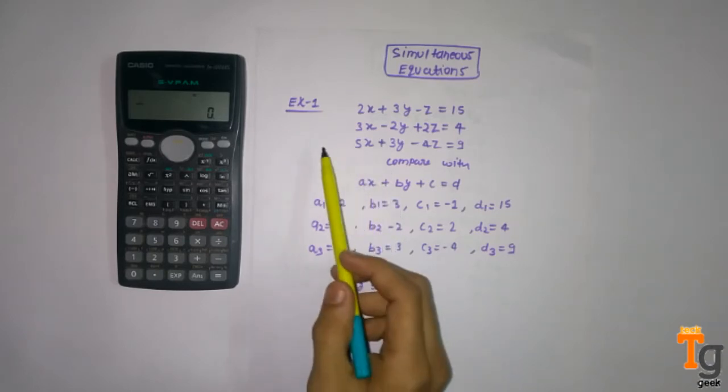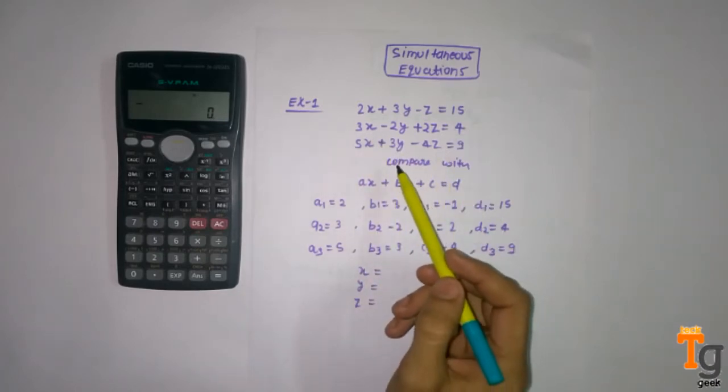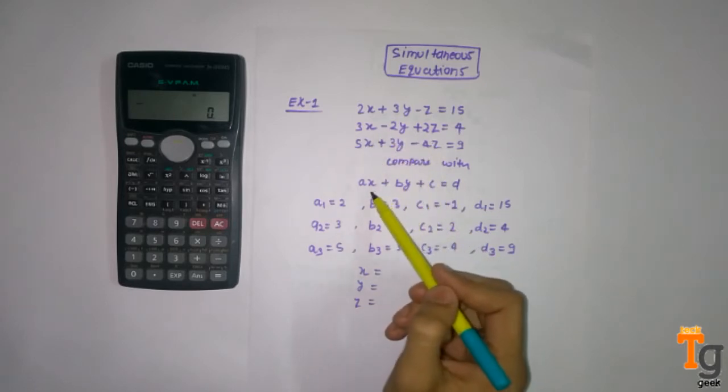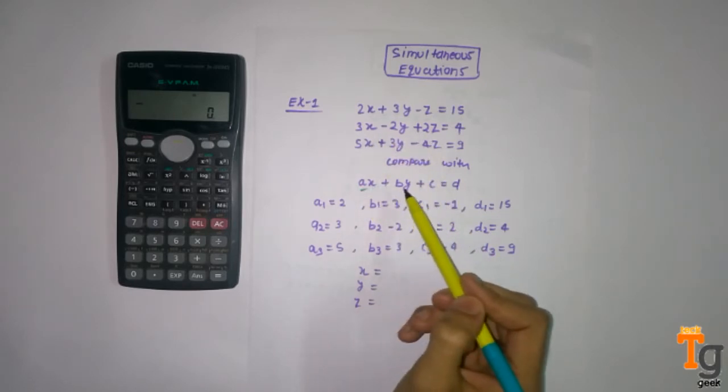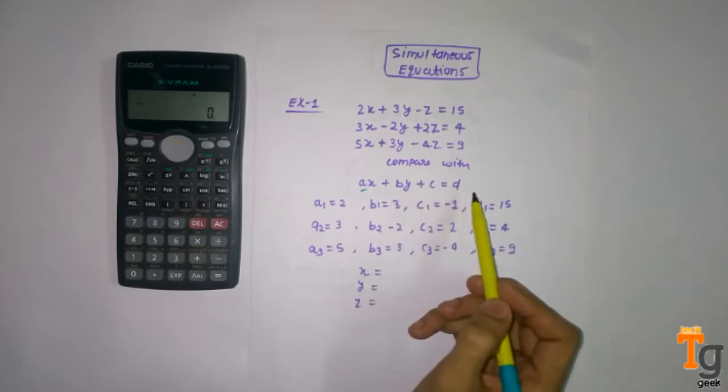So here is one example and how we solve it. First compare this example using this general form of equation: Ax plus By plus C equal D.